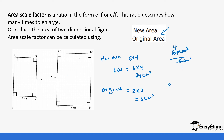So our area scale factor is 4. There are no centimeters — the area scale factor has no unit.